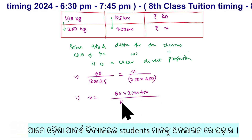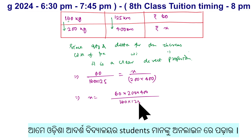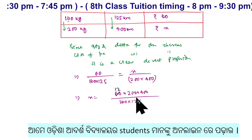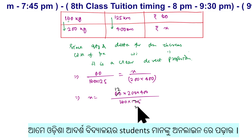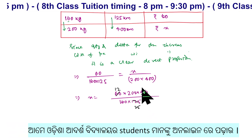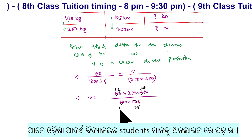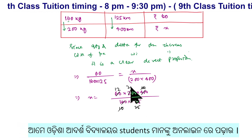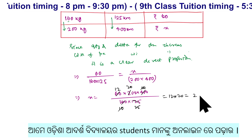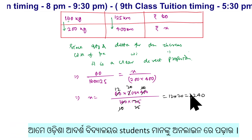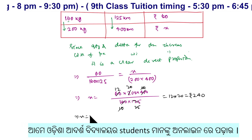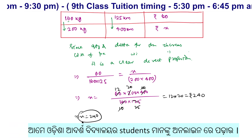Calculating: (200 × 400 × 60) divided by (160 × 125) gives us the answer of Rs. 240. That's the answer.